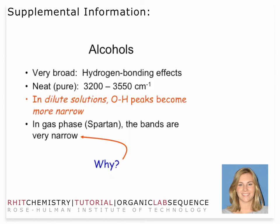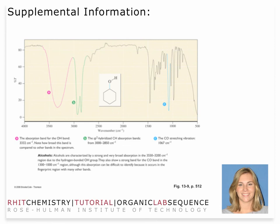Alcohols are another functional group. You'll observe OH transitions a little bit higher than 3000 wave numbers, between 3200 and 3500. OH peaks become broadened as the degree of hydrogen bonding increases. In dilute solutions, those become more narrow, and in the gas phase they're extraordinarily narrow. Here's a typical example — this is cyclohexanol, one of the products you'll be working with this quarter. You can see at label A the very broad, very intense OH peak shown in pink.